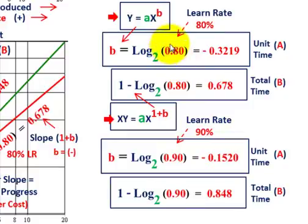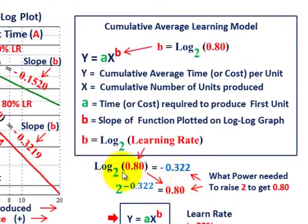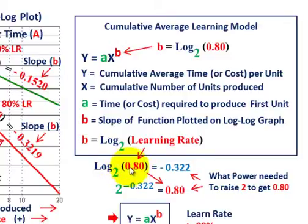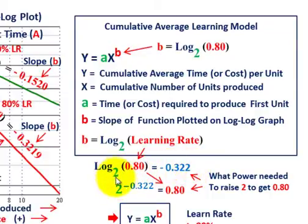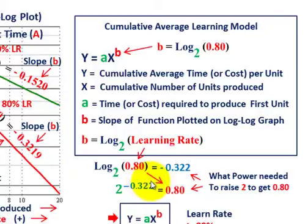That's pretty much what we've done here. These logs are not mysterious — they're used to understand our graph more easily. Rather than looking at curved lines, we can put them in straight line form and interpret them that way. Log base 2 of 0.80 equals minus 0.322, which is asking what power 2 must be raised to in order to equal 0.80. That summarizes our discussion of the learning and experience curve on a log-log plot.